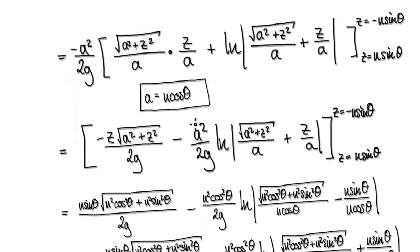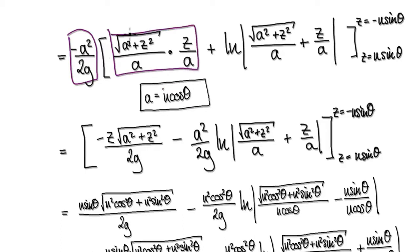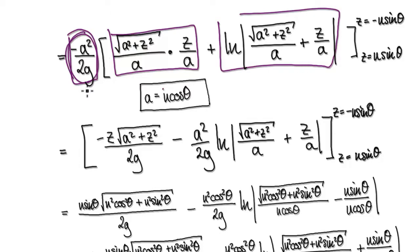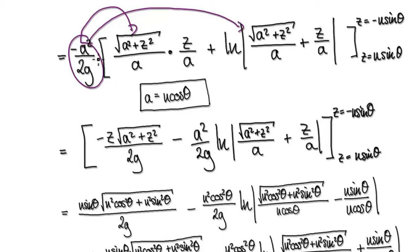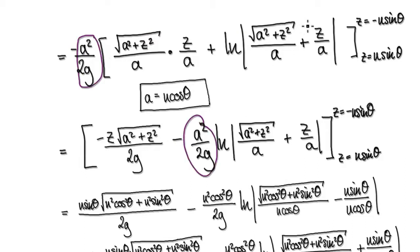Before substituting A, let's tidy up. You can push the constant back into the expression. A times A gives A squared, and the 2G terms cancel. With the minus signs, that yields this simplified expression. So we are now at this stage with the limits Z equals something and Z equals something.